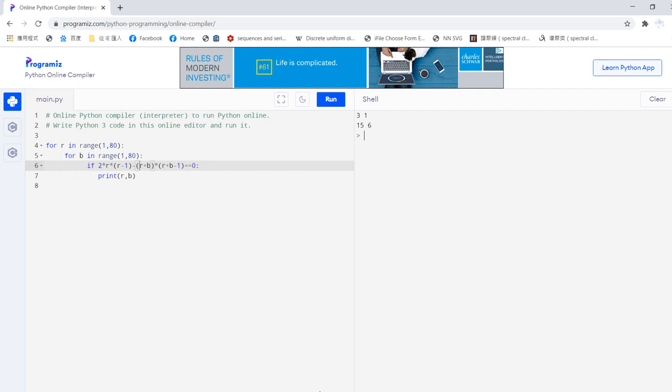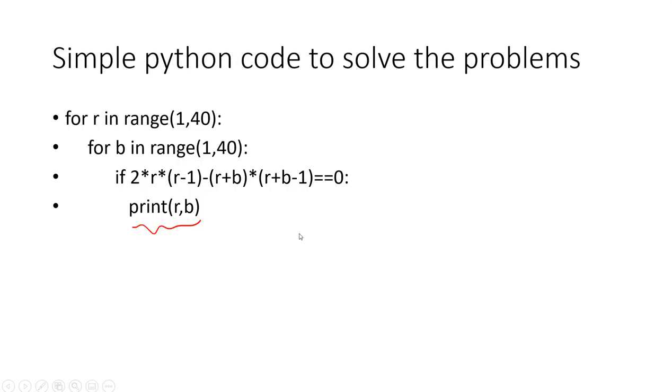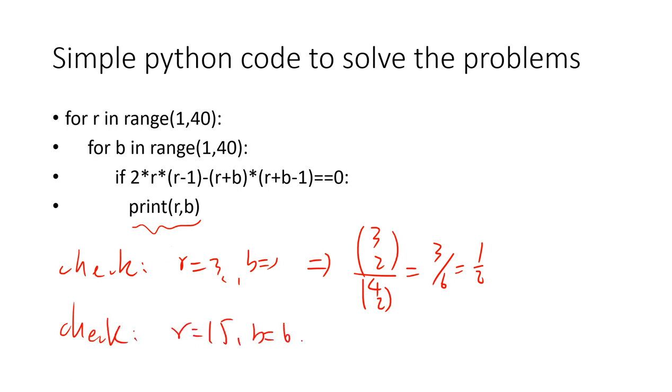And we check whether this solution is valid. Easy check. So r is 3, b equals 1, then the probability is (3 choose 2) over (4 choose 2), which is 3 over 6, half. Check. r equals 15, b equals 6, what we have is (15 choose 2) divided by (21 choose 2). So we have (15 times 14) over (21 times 20), which is also 0.5.